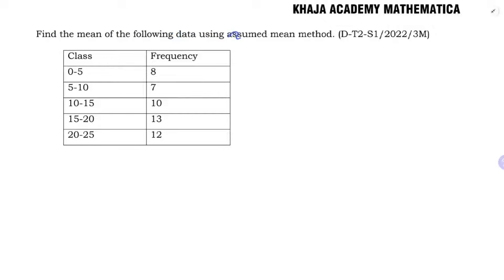Find the mean of the following data using assumed mean method. Class and frequency are given. The formula for mean using assumed mean is: a plus sigma fi di by sigma fi.